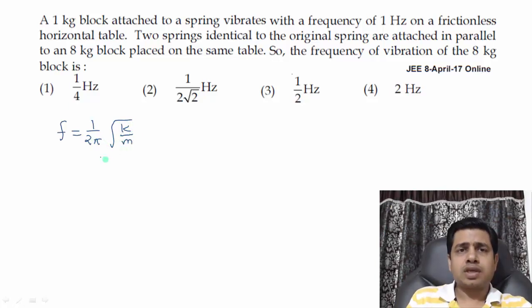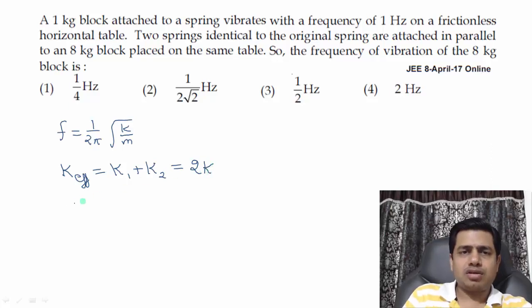This is the frequency. The 1 kg block was vibrating at 1 Hz frequency. Now two identical springs are attached in parallel. In parallel, the effective spring constant gets added. So k_effective = k1 + k2. If both are identical springs, and the original spring has constant k, then the original spring constant was k, so here the net becomes 2k.